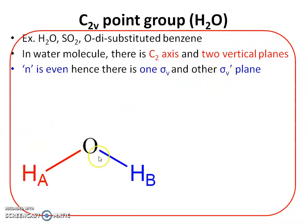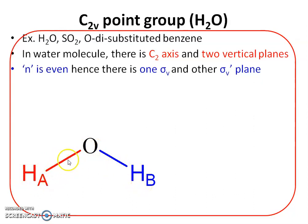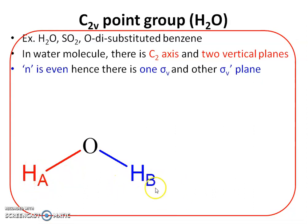The water molecule is angular — hydrogen, oxygen, and hydrogen are oriented in the same plane. There are two hydrogen atoms which are equivalent, but to distinguish them they are marked as A and B.